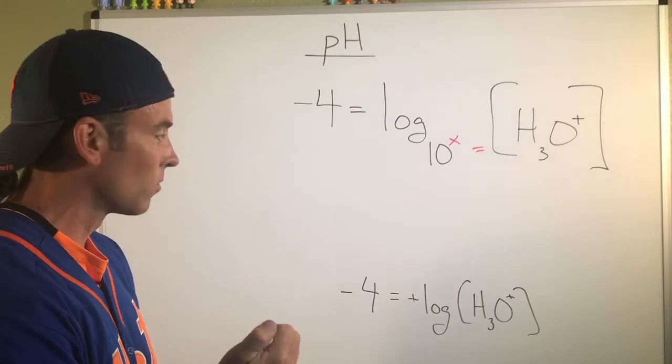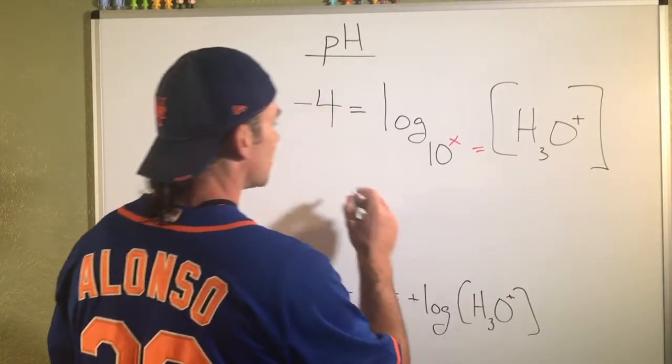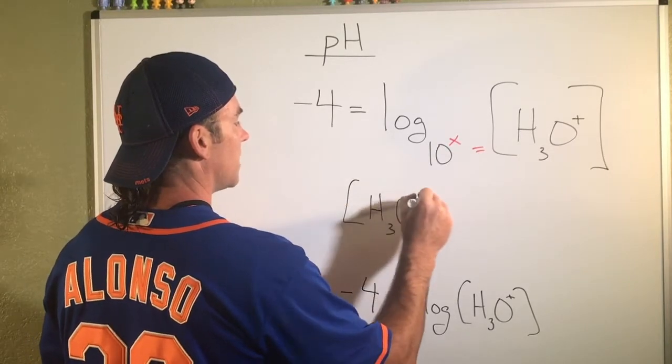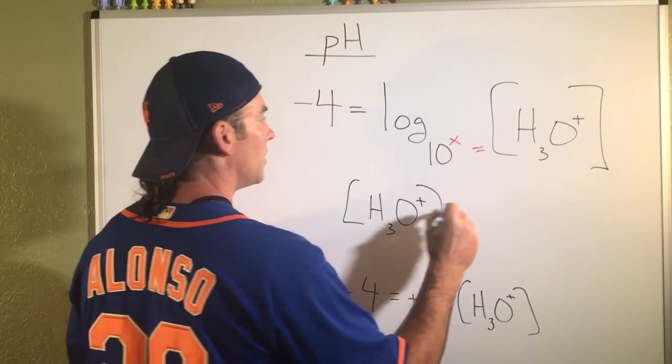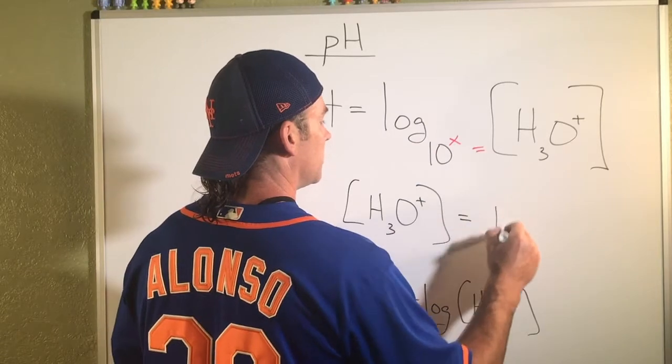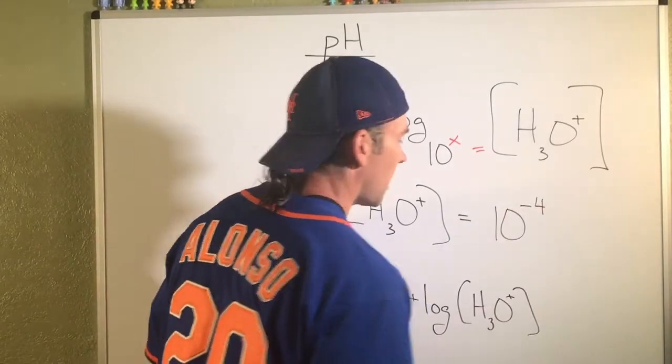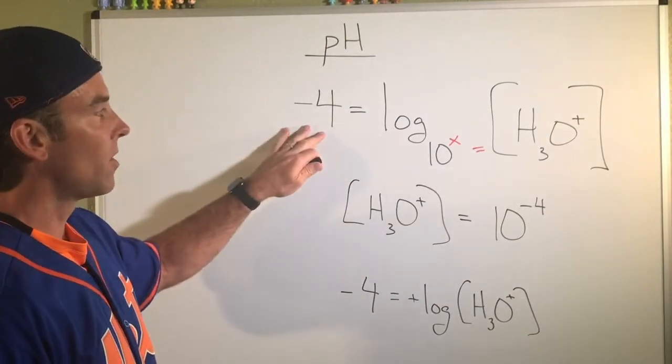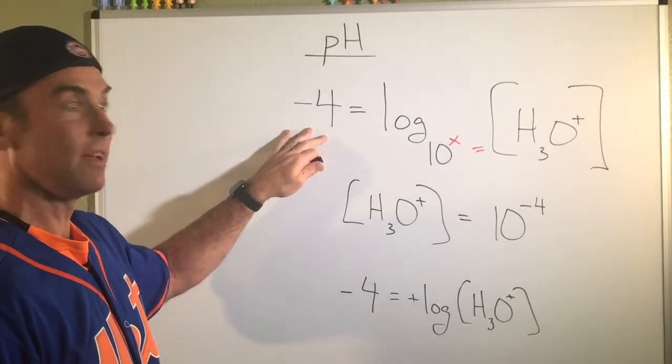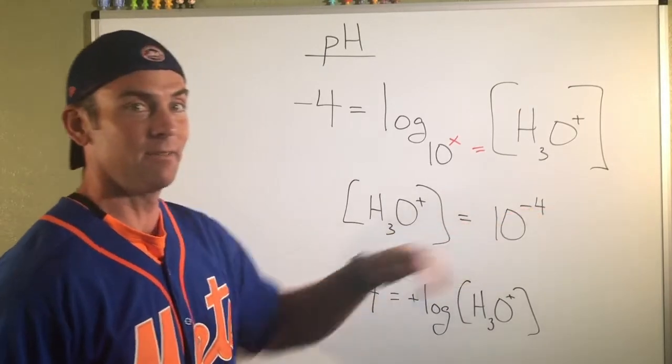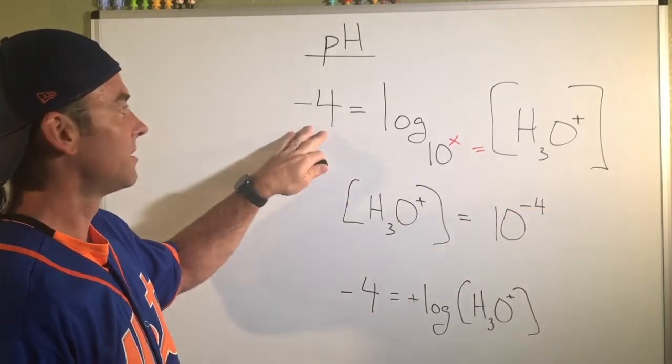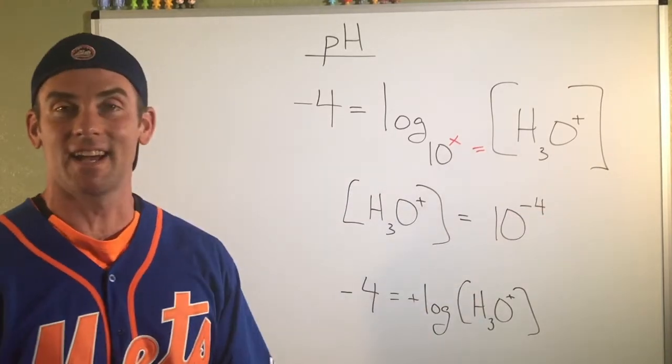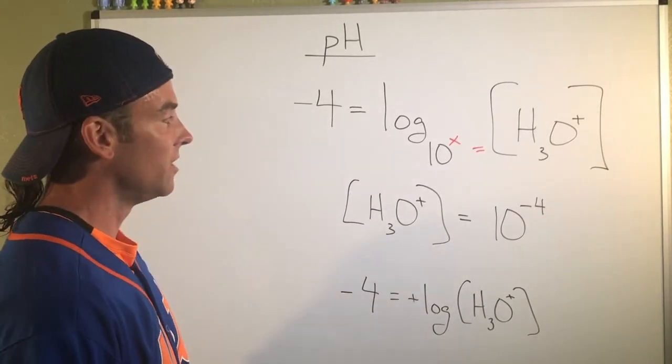So that's telling me that whatever this H3O+ concentration must be equal to 10 to the negative fourth. So if that number was, let's say negative three, that would mean it's 10 to the negative three. If that number was, I don't know, negative six, it would mean that was 10 to the negative six as the concentration of H3O+.